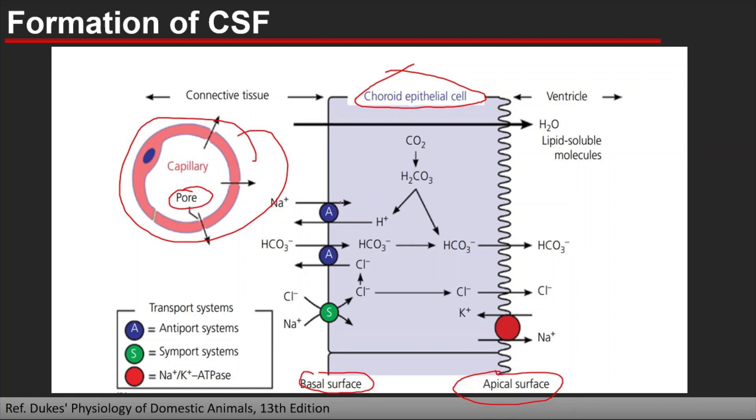Here, the transport system—antiport—means these are exchangers. Two molecules are moving in opposite directions across the cell membrane. Sodium is taken in, and at the same time, hydrogen ion is taken out. In a similar way, bicarbonate is coming inside the cell, and chloride is going outside the cell—exchanger or secondary active transporter.